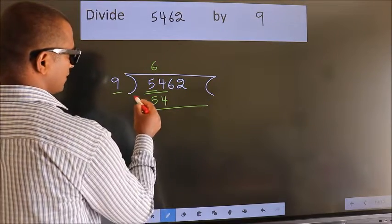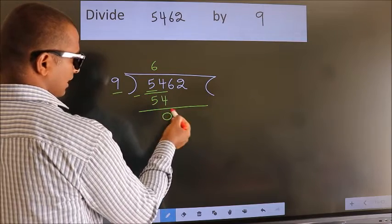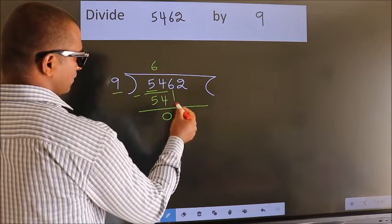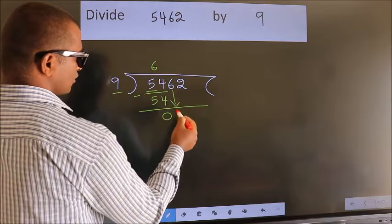Now we should subtract. We get 0. After this, bring down the beside number. So 6 down.